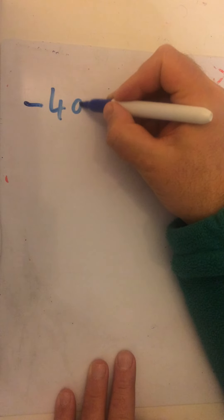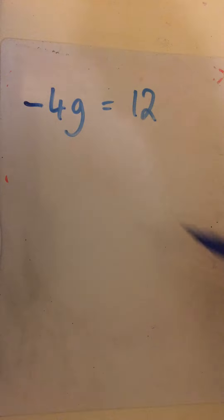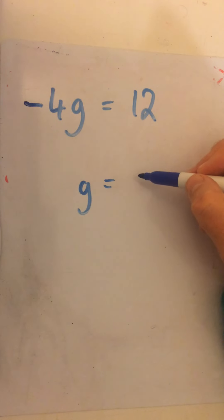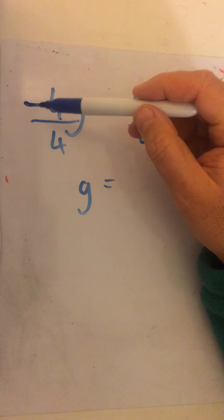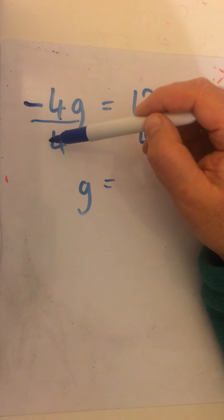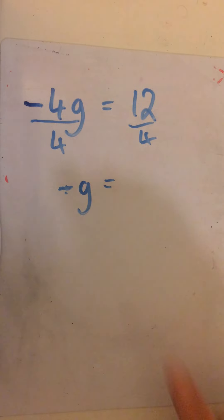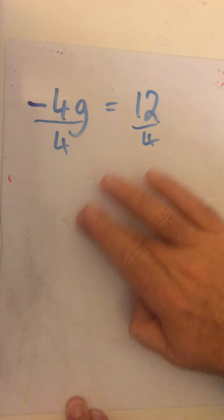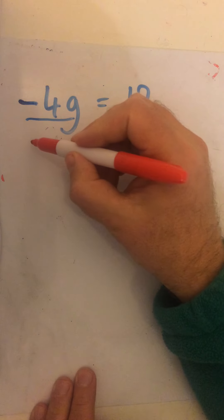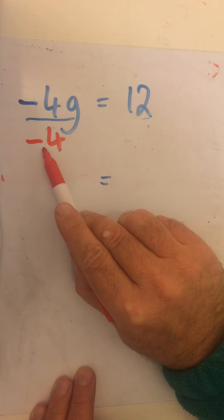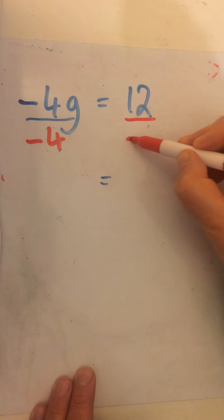Now we can move on a little bit and do some work on negative numbers. If we look at this one: minus 4g equals 12. The same rules apply — I want to end up with g equals something. But if I divide by 4, I get minus 4 divided by 4, and a negative divided by a positive gives me a negative g. I don't want a negative g — I want a positive g. So if I have a negative number like this, I have to divide by a negative number as well.